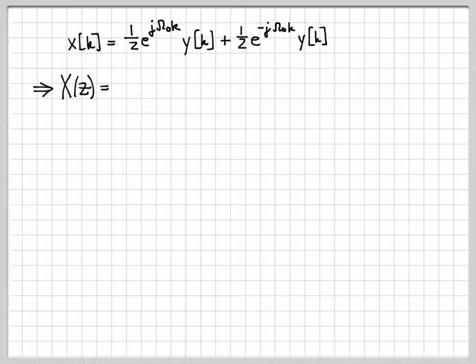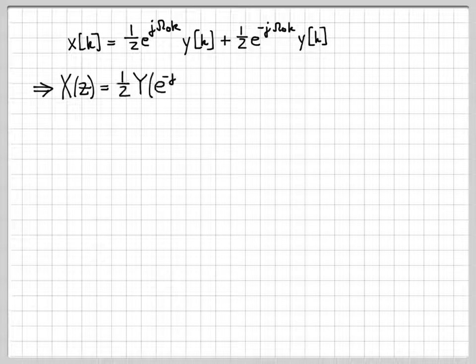Here's x[k] that we're dealing with. And we know now, since we're going to use the exponential sequence property, we can write X(z) as (1/2) times Y evaluated at e^(jω₀) times z.